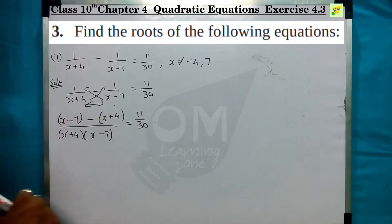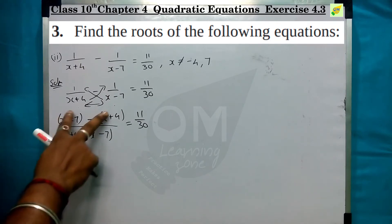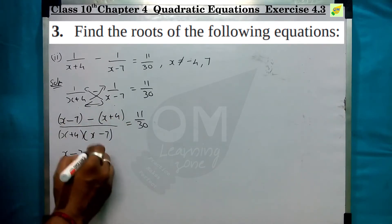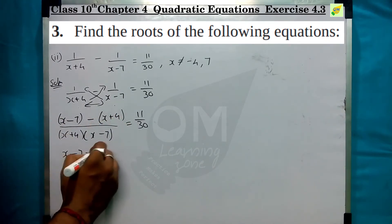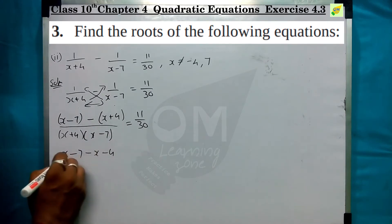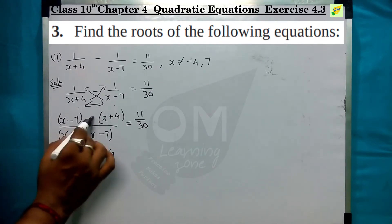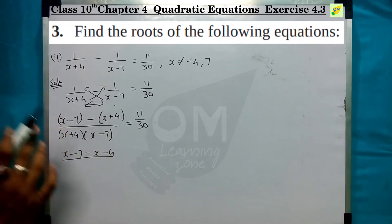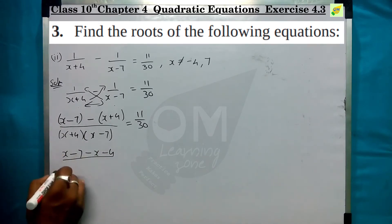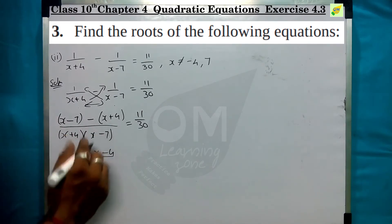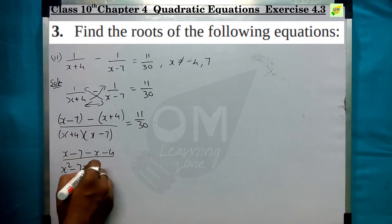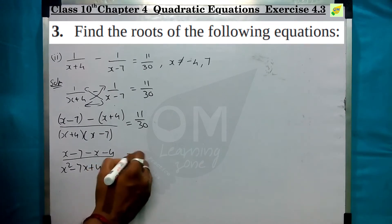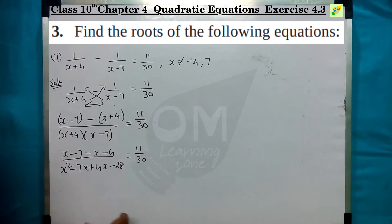We open the bracket. First one: open x minus 7, this is minus one plus x, minus x plus 4 is minus 4. Then multiplication: x times x is x squared, x times minus 7 is minus 7x, 4 times x is plus 4x, and 4 times minus 7 is minus 28, equal to 11 by 30.